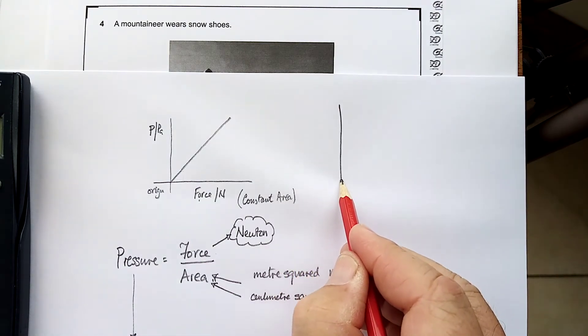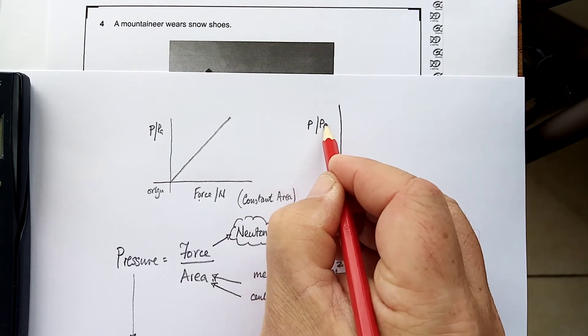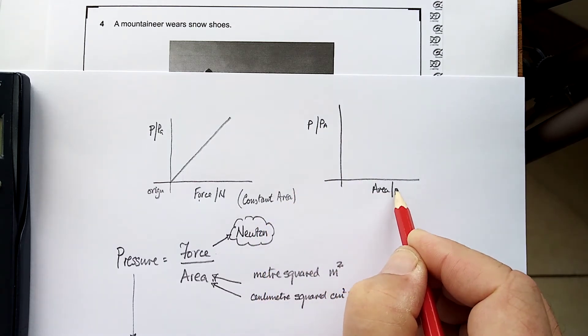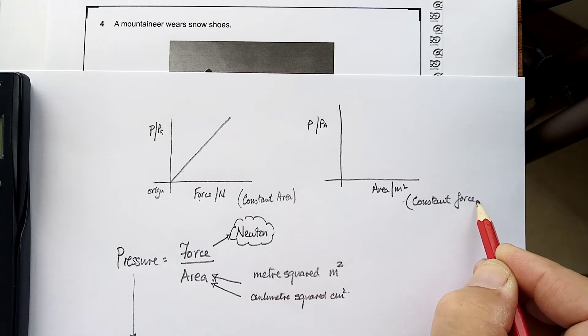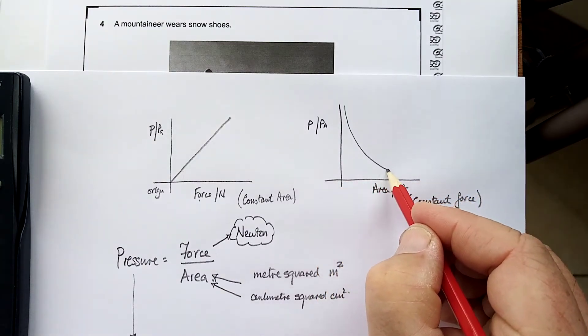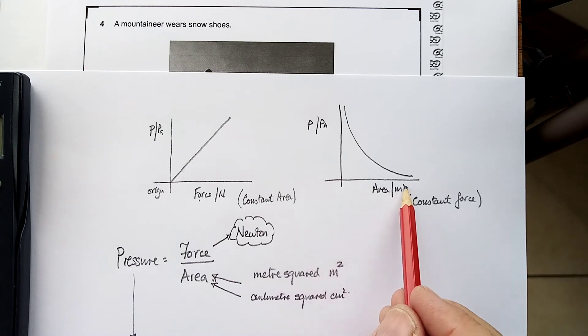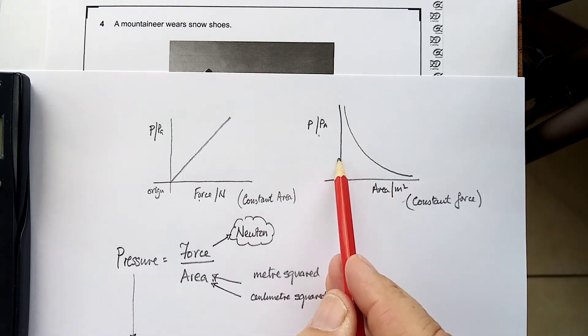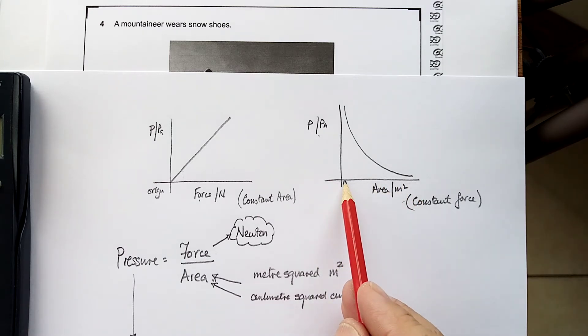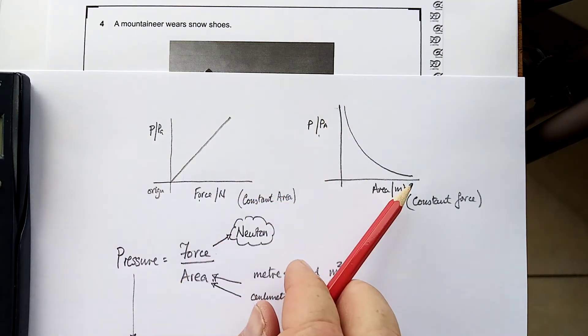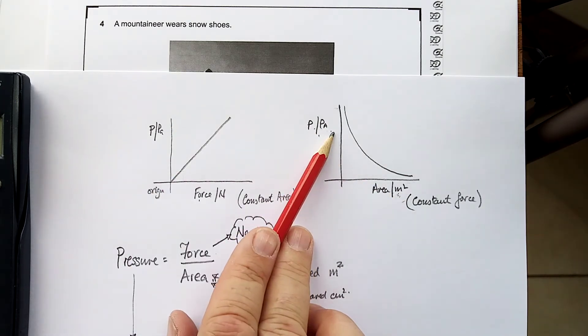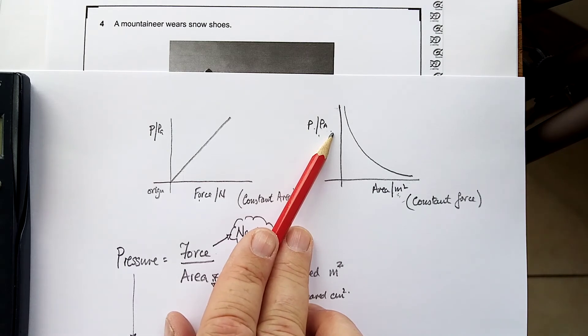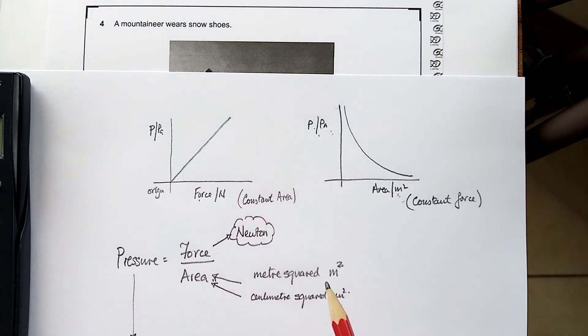The other one that you have is the link between pressure and area for constant force. And this is an inverse relationship. As the area increases, the pressure decreases. As the area gets smaller, the pressure gets bigger. It's an inverse relationship. Notice that that doesn't touch the axes. Notice the way I have labelled my Y-axis. That's a habit you should get into.